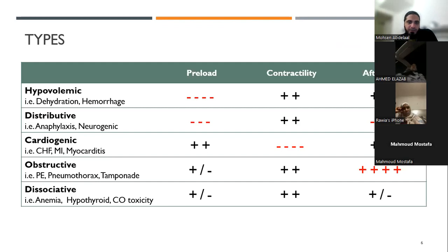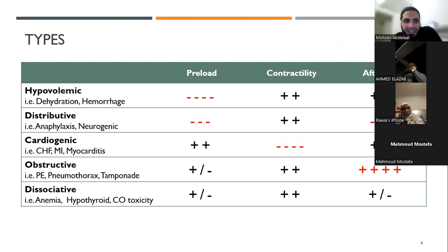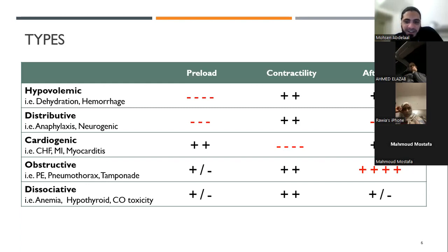The types of shock are based on the same three factors affecting stroke volume. In practice, it's very difficult to see a patient with an isolated cause of shock — most of the time it will be multifactorial. To simplify, there are five types of shock based on which part of the hemodynamics is most affected. The simplest is hypovolemic shock.